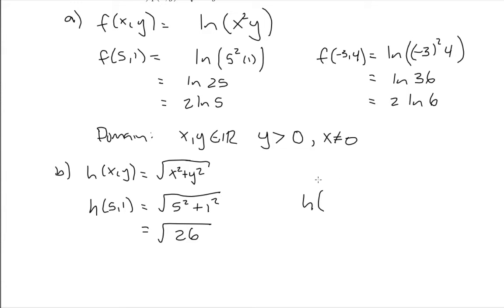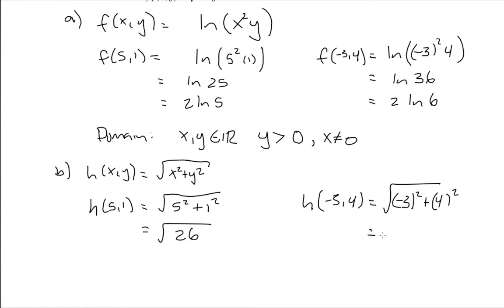Next, they'd like us to calculate the value of h at the point negative 3, 4. I replace all x's by negative 3 and all y's by 4. So I get the square root of negative 3 squared plus 4 squared, which is the square root of 9 plus 16, which is the square root of 25, and the positive square root of 25 is 5.